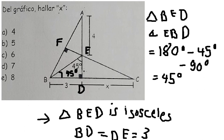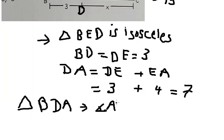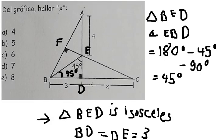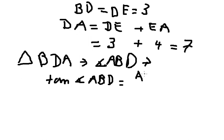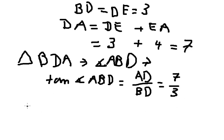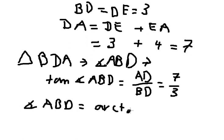We have AD as number 7 and BD as number 3. We use tan of angle ABD equals AD over BD. So angle ABD equals arctan of 7 over 3.